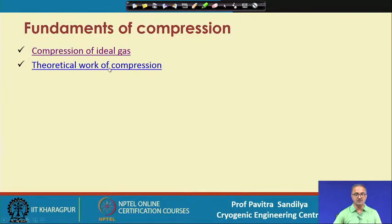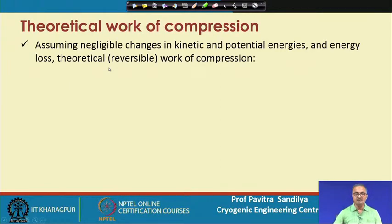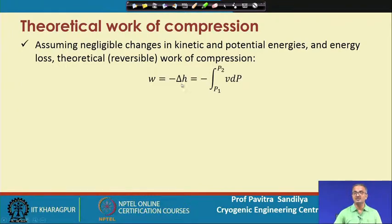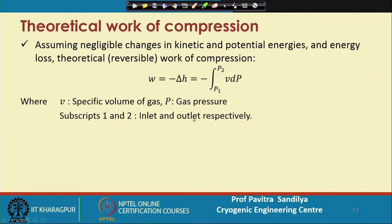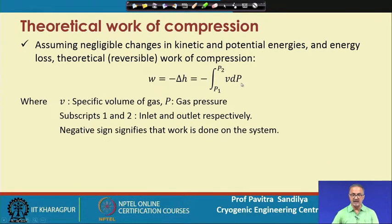Next we come to the theoretical work of compression. We assume there are insignificant changes in kinetic and potential energies and no energy losses. Applying the first law of thermodynamics, the work equals the negative change in enthalpy, given by the integral from P1 to P2 of V dP, where 1 and 2 denote the inlet and outlet, V is the specific volume, and the negative sign indicates work is inputted to the compressor.